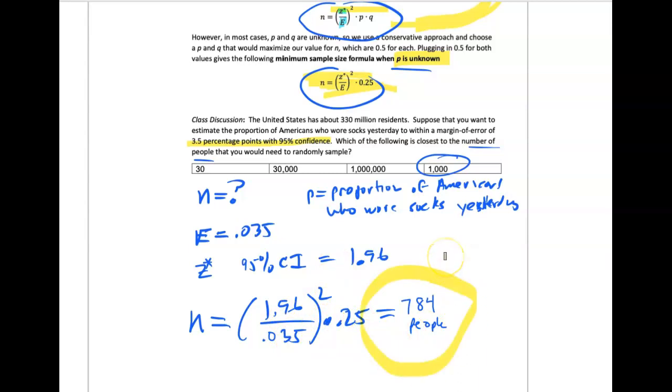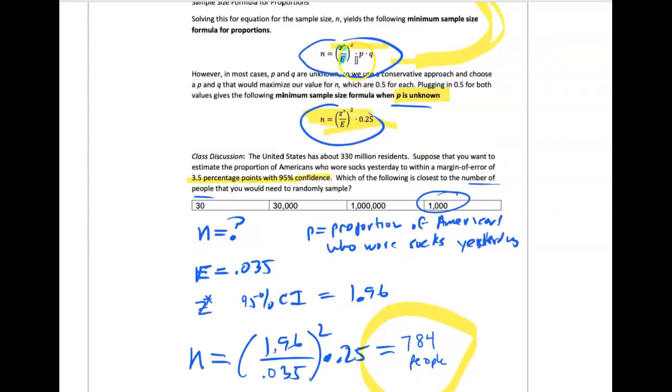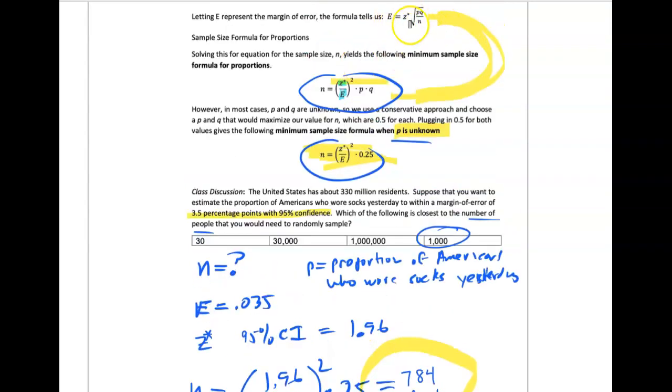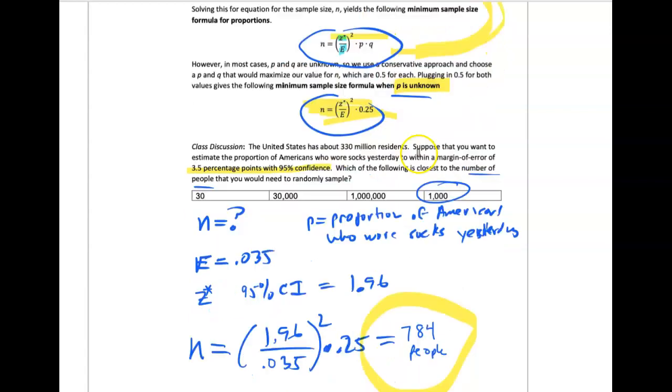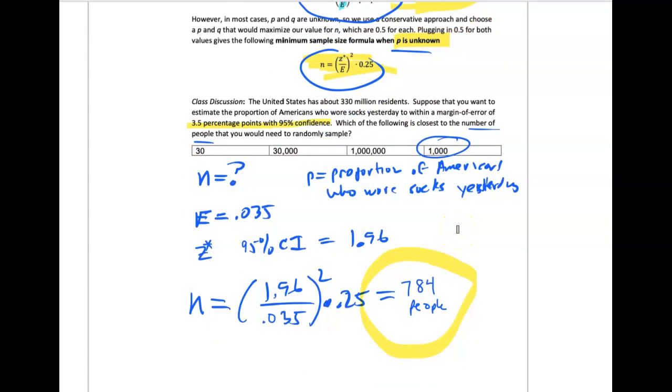Sometimes students get confused about how this is connected. It's connected to the confidence interval formula for margin of error. We're working backwards because I want to specify up front what level of confidence I want and my margin of error.